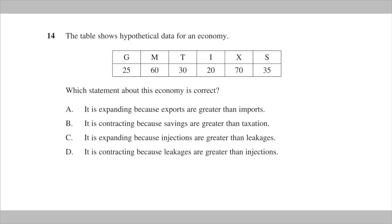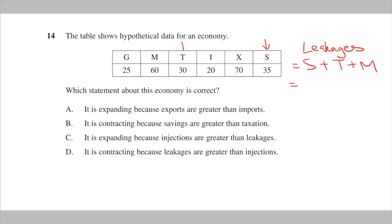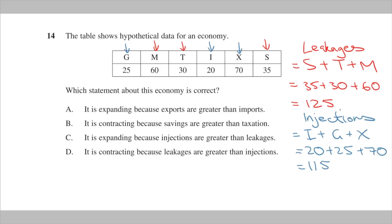Let's practice what we learned today with some HSC questions. In 2017's HSC question 14, we're given a bunch of leakages and injections and asked to figure out the impact on economic activity. Let's add up the leakages on one side and then do the same with injections. We'll find that leakages are greater than injections, and we know that this causes a contraction in the economy. Therefore, the answer is D.